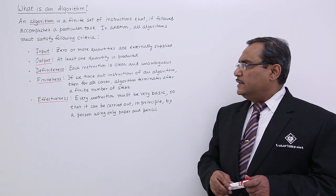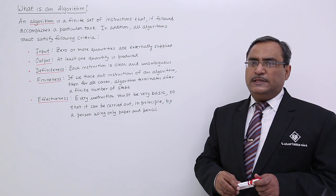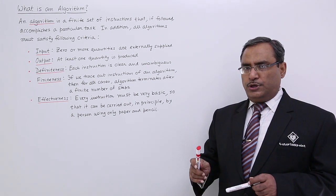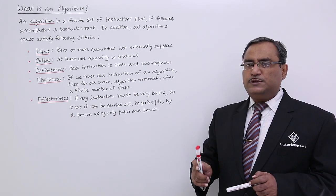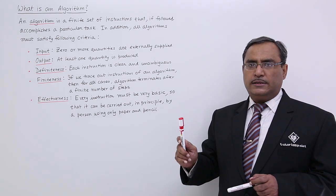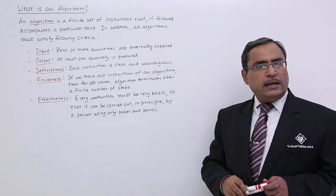Definiteness: Each instruction is clear and unambiguous. That means each and every instruction used in our algorithm must be unambiguous, because the meaning should be crystal clear.